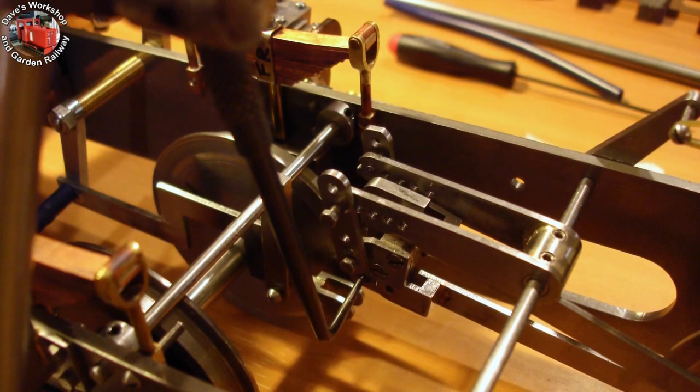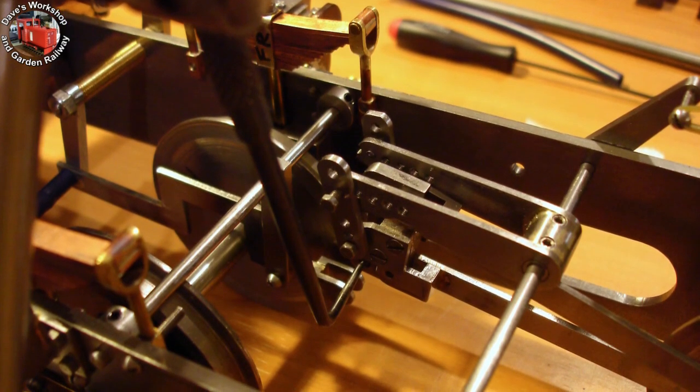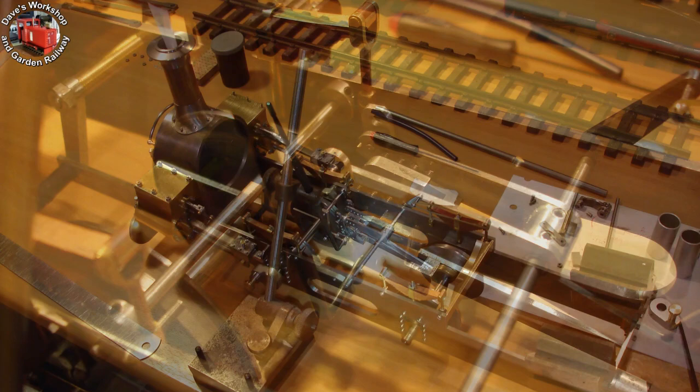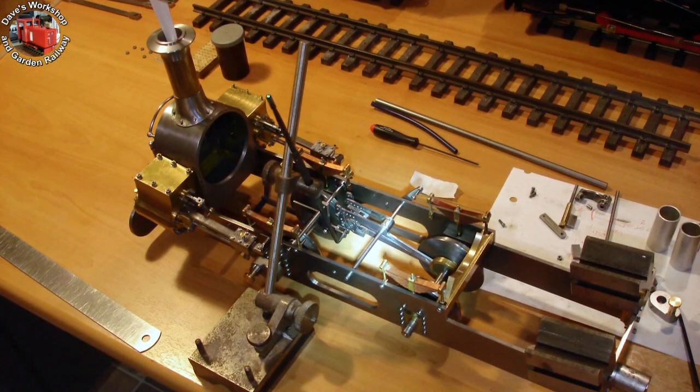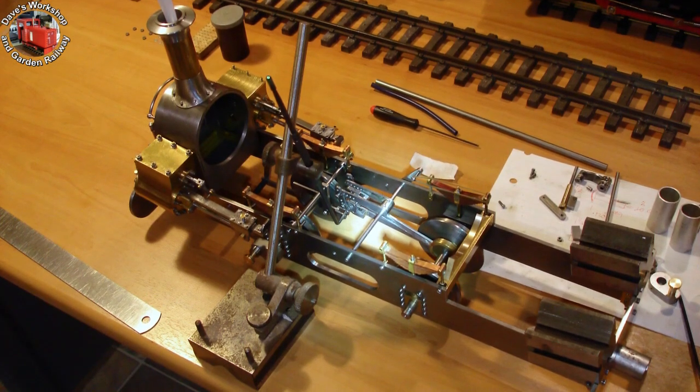Using my old apprentice-made scribing block, or surface gauge, with a scriber to make sure I'm getting enough free vertical movement of the link, in the up and down position. You can see the all brass rear stretcher assembly attached to the frames.